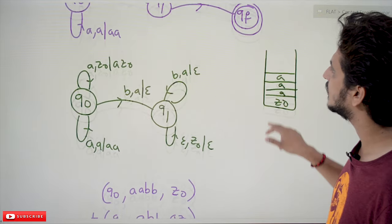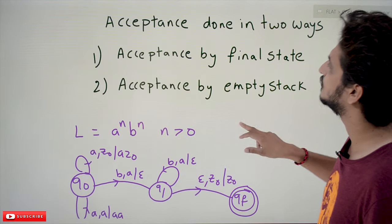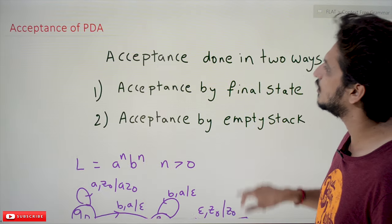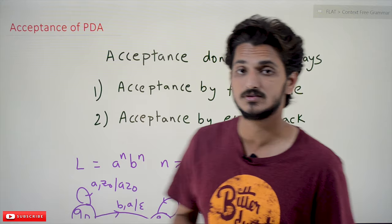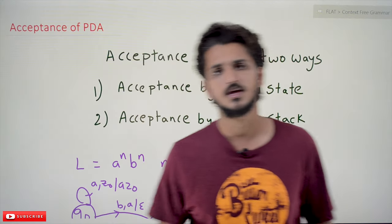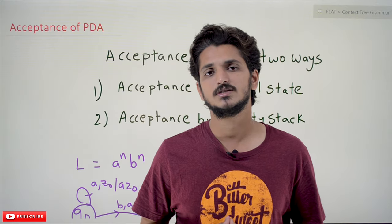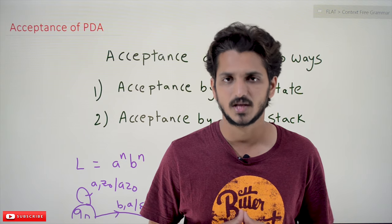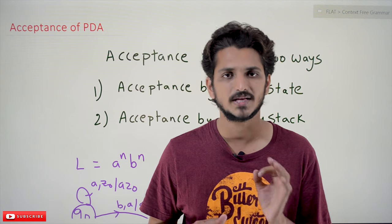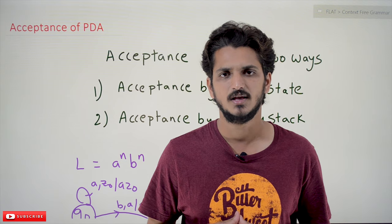These are the two methods of acceptance of an input string by a pushdown automata. Hope you understand the concept. If you have any questions, please post them in the comment section below. Thanks for watching. If you haven't subscribed to our channel, please subscribe and press the bell icon for the latest updates.